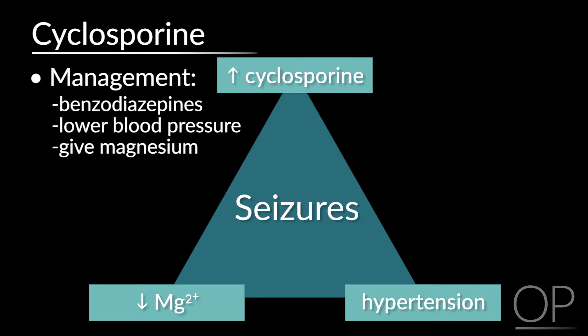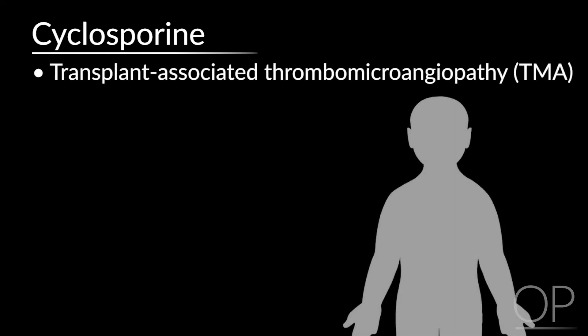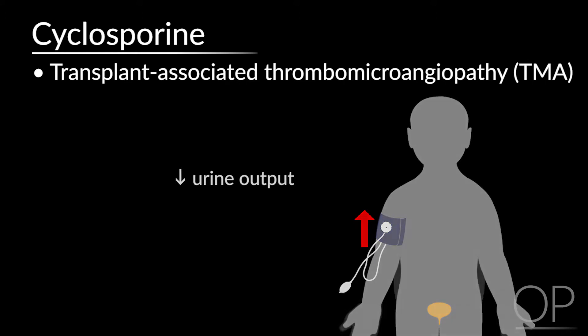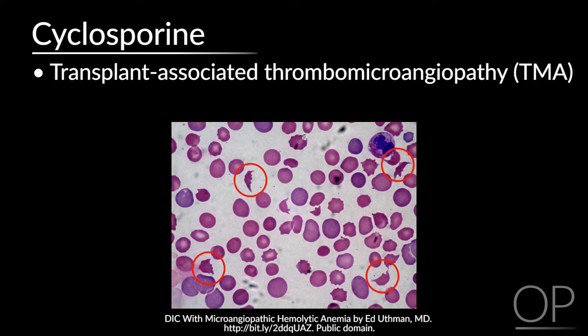The seizures are managed with benzodiazepines, and can be prophylaxed with Keppra, phenytoin, or Ativan. Other complications of cyclosporine include transplant-associated thrombomicroangiopathy. This often presents with hypertension, edema, and oliguria. You can also see hemoglobinuria, so you want to check a urinalysis. On a peripheral blood smear, schistocytes are noted. The treatment is to stop the offending agent.